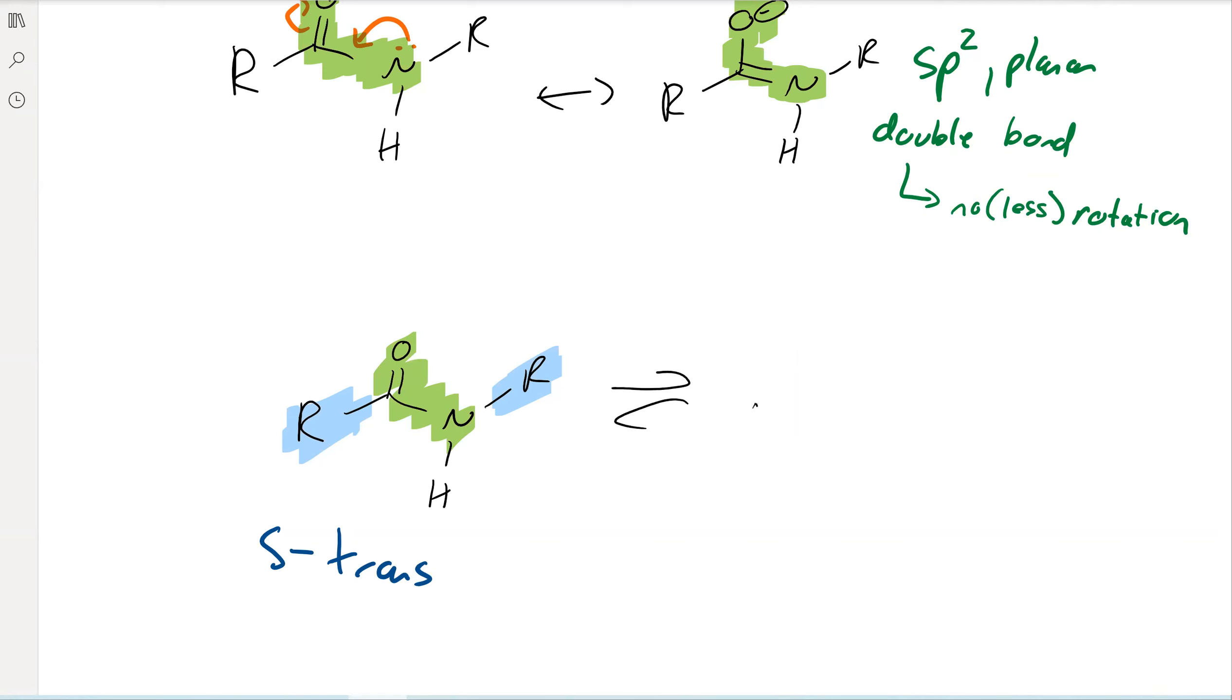And it can equilibrate with the other form. But again, there is a significant barrier to this rotation. And this would be the S-cis conformer.